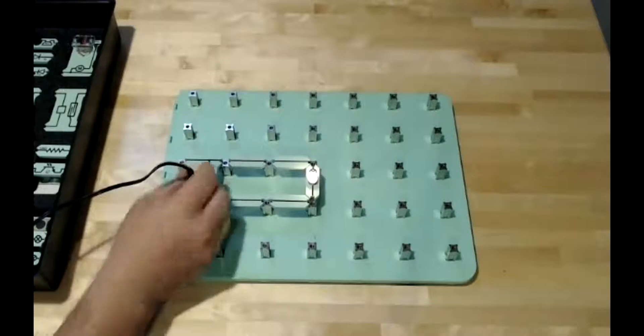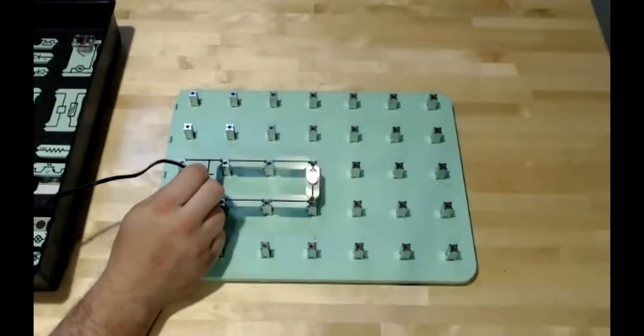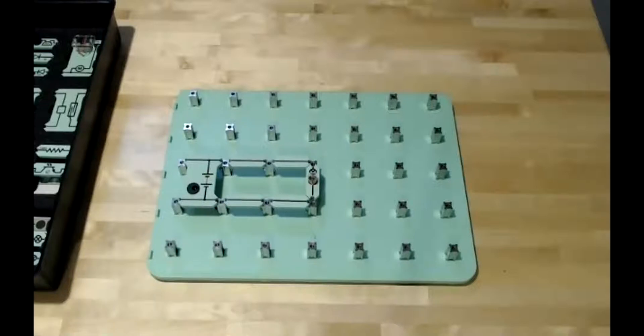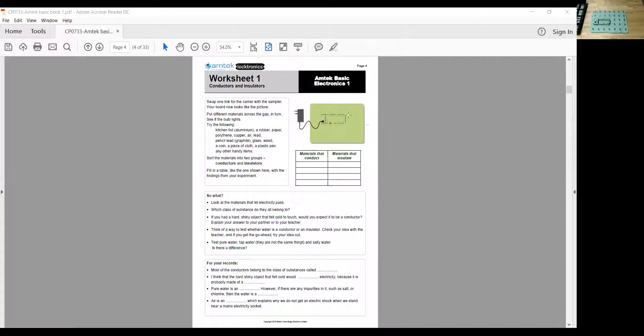All right, let's move to the next page. So the next page is going to have us swap out one of these carriers for the sampler, just to show you what it's asking us here. Swap out a carrier for a sampler. So I'll show you what that sampler looks like, and then we're going to try some different—I don't have all of these items, but I do have some of those odds and ends that I was talking about here. And then we can fill out this table with materials that conduct and materials that insulate, try to identify some of the properties that these materials have in common, and again, just to demonstrate some of those properties.